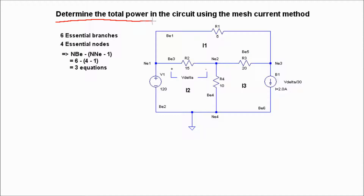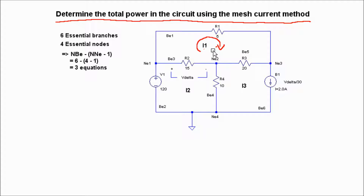Determine the total power in the circuit using the mesh current method. In mesh currents, we're going to take the currents from each of these loops. We're going to call this I1, going clockwise. Then I2 going this way, and I3 going this way. In mesh currents, we're going to end up with a super mesh on this particular problem, and we'll see that come about in a moment.